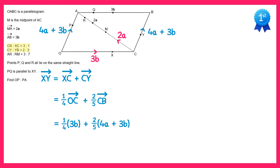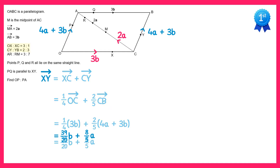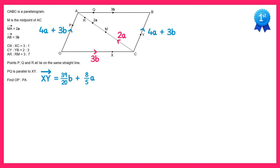Now if we expand these brackets, 3 times 1 quarter gives 3 quarters B. Then 2 fifths times 4A is 8 fifths A, and 2 fifths times 3B is 6 fifths B. There are two terms involving B, so simplifying those we end up with 8 fifths A plus 39 over 20 B. So we've found the vector XY.